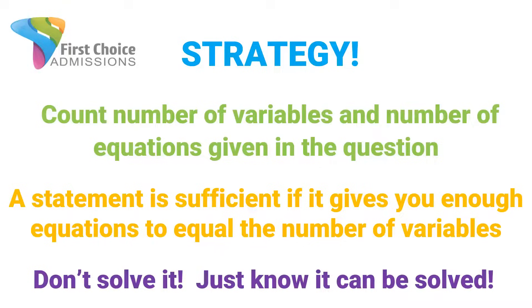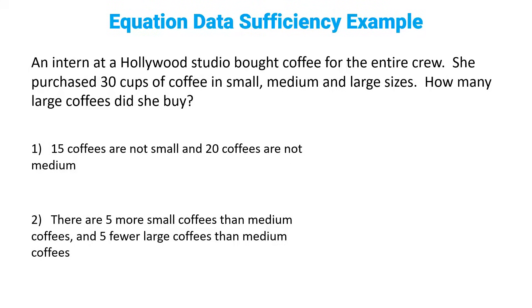Let's do a real-world example. An intern at a Hollywood studio bought coffee for the entire crew. She purchased 30 cups of coffee in small, medium, and large sizes. How many large coffees did she buy? First step: go back to the question stem and write down exactly what we've been asked — find the exact value of L. Next step: write down any equations given in the question. Here, that equation is s plus m plus l equals 30.